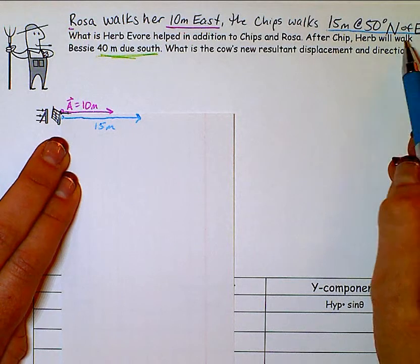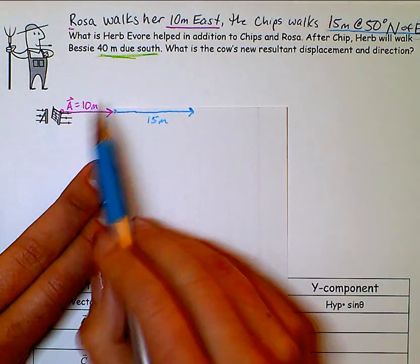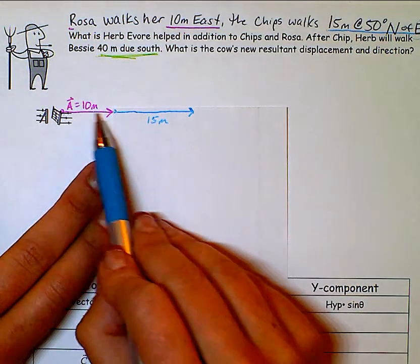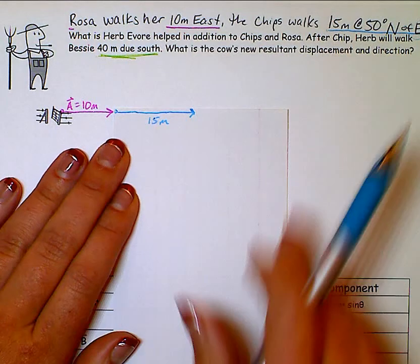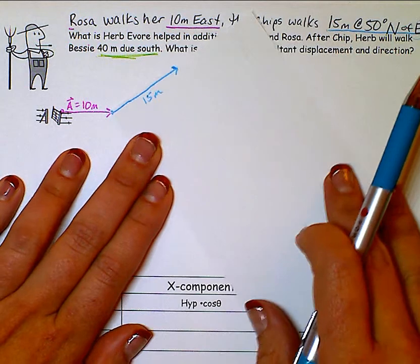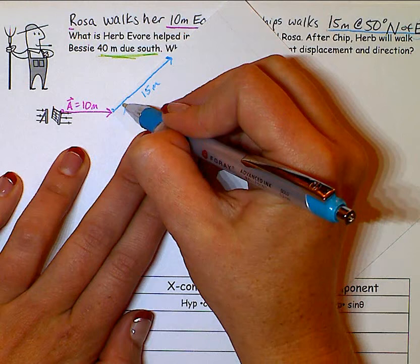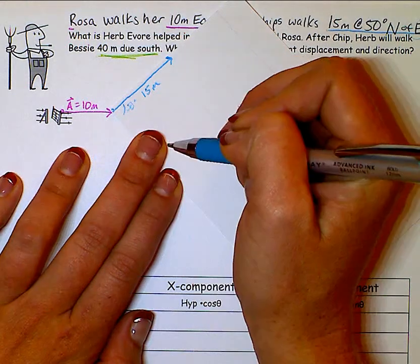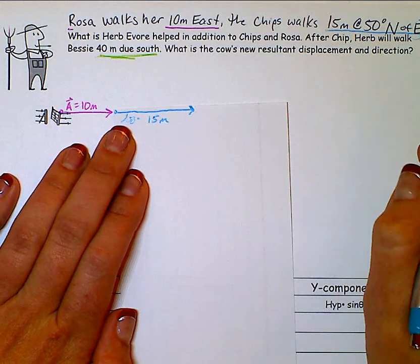So first go due east. So right here the cow first goes from this point to this point and this is where I'm starting. But instead of going due east like this you're going to swing it up to the north. So this angle that you're creating here is going to be 50 degrees. So once again, instead of due east, I'm going to go 50 degrees to the north of that.